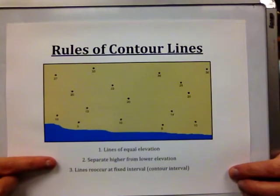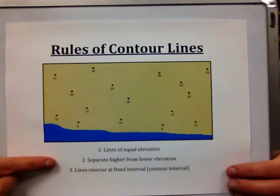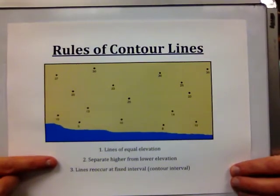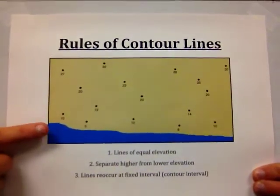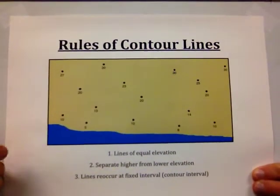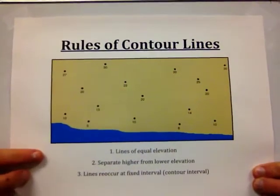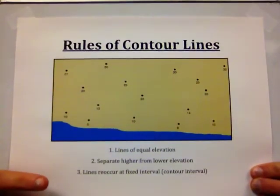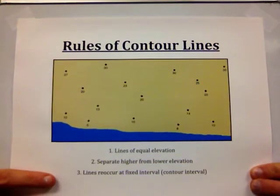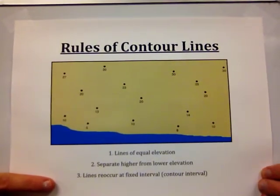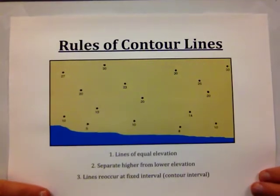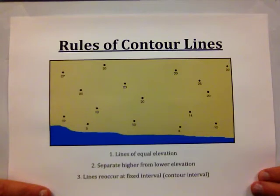Contour lines are representations of elevation on a map. They separate higher from lower elevations, which we will see as we draw the lines in this map area. Contour lines reoccur at a fixed interval known as the contour interval. On a map, this will always be given — for example, 10 meters or 20 feet, depending on what unit you're using.